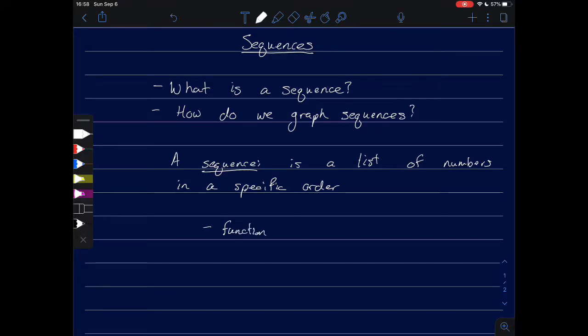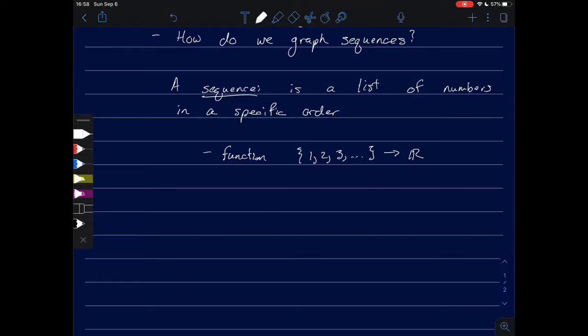A sequence is a list of numbers in a specific order. We might think of it as a function from the set 1, 2, 3, and so on, into the real numbers. A sequence may be finite or infinite, but since this is calculus, we're going to focus on the infinite.